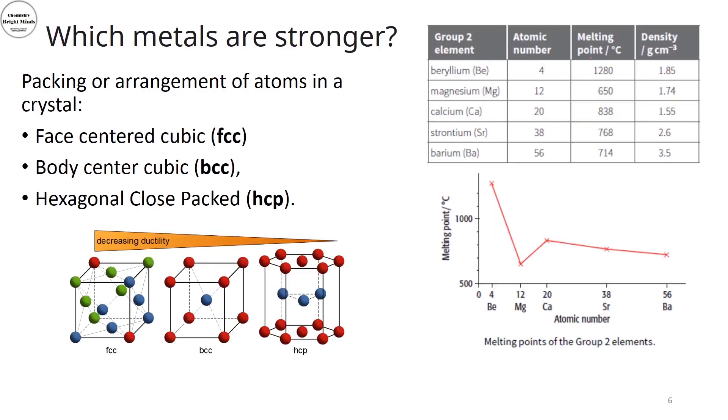Now, if I looked at the melting points, you could see some irregularity. And the reason behind that is the packing or the arrangement of atoms in the crystal. So I have three types of packing in crystals. The first one is the face-centered cubic. And the second is the body-centered cubic. And the third one is the hexagonal closed pack.